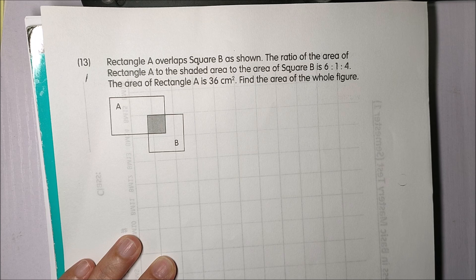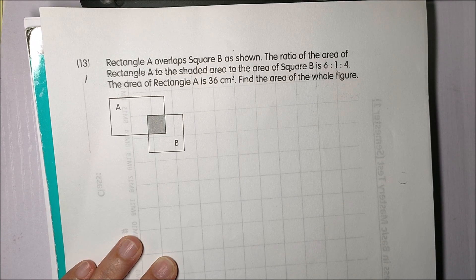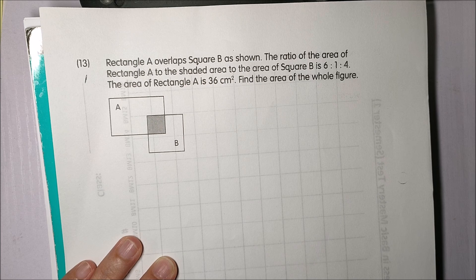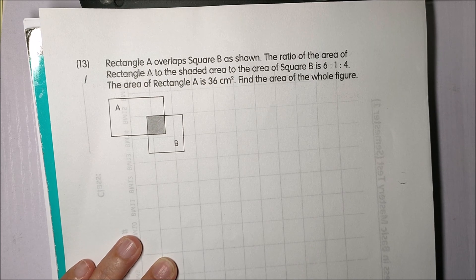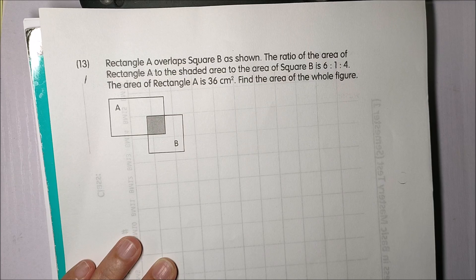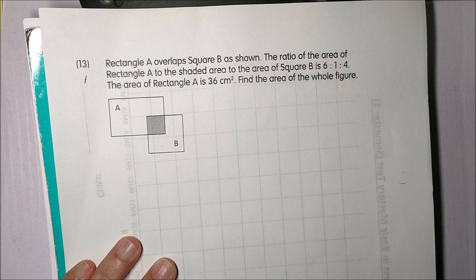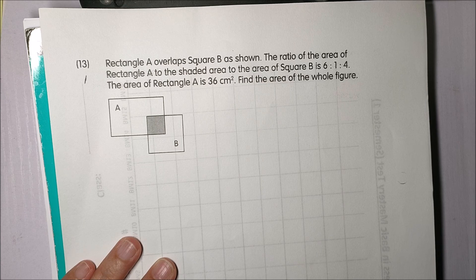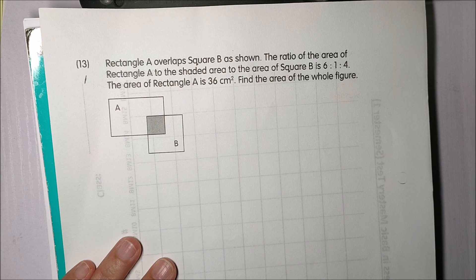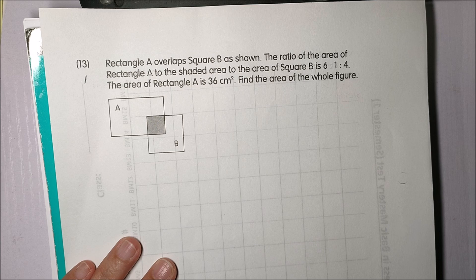Hi, today we're going to solve a question on ratio and this question involves shapes. Let's read the question. Rectangle A overlaps square B as shown. The ratio of the area of rectangle A to the shaded area to the area of square B is 6 to 1 to 4. The area of rectangle A is 36 square centimeters. Find the area of the whole figure.